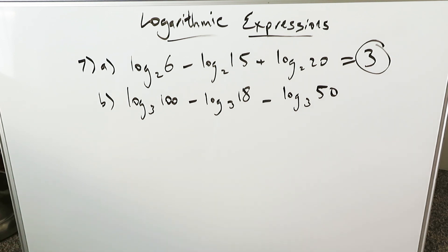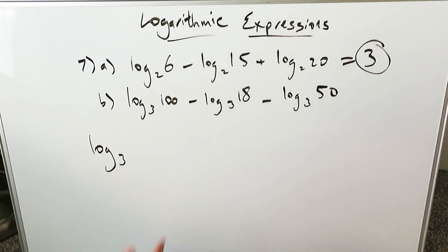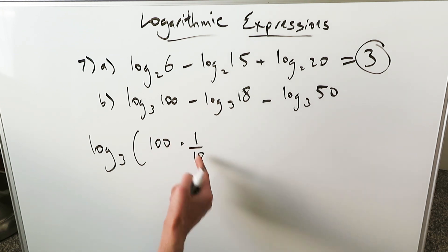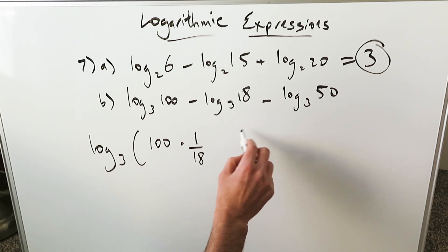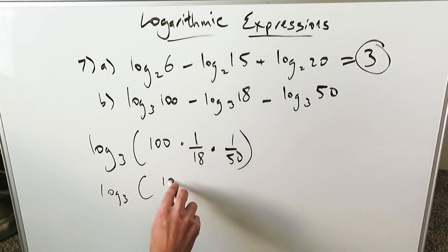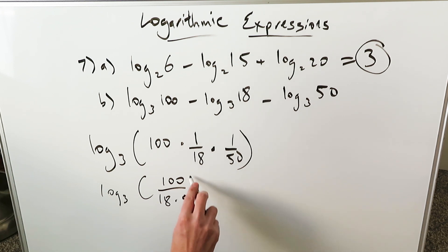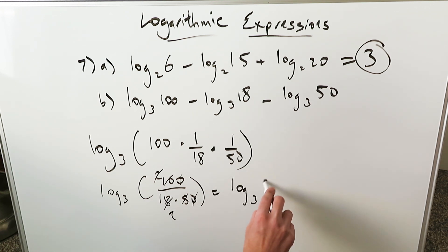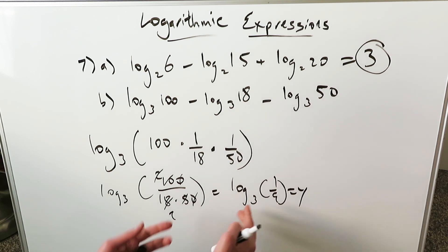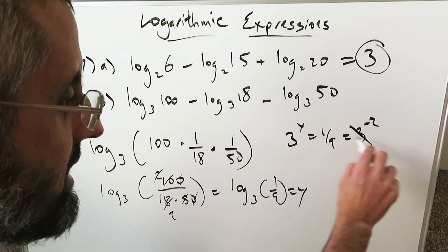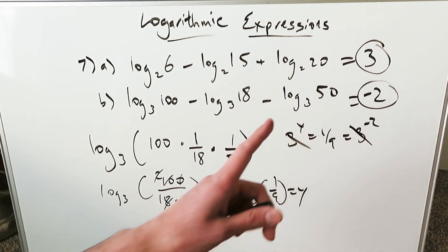Question 7B: log base 3 of 100 minus log base 3 of 18 minus log base 3 of 50. Bring everything under a common log — the minuses become quotients. I have log base 3 of 100 divided by (18 times 50). Simplifying: 100/(18×50) = 100/900 = 1/9. Log base 3 of 1/9 equals Y — 3 to the Y equals 1/9 equals 3 to the minus 2. Cancel these out: Y equals minus 2, and that's your answer.